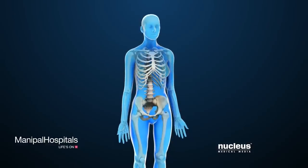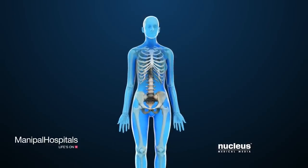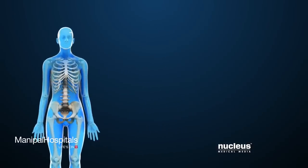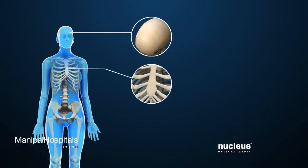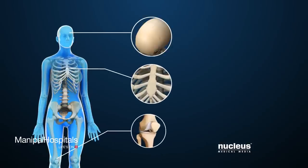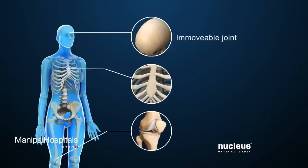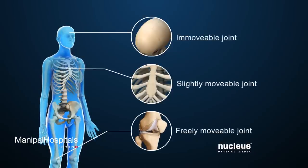Bones provide support for the body and aid in its movement. The place where two or more bones meet is called a joint. Joints may be immovable, slightly movable, or freely movable.